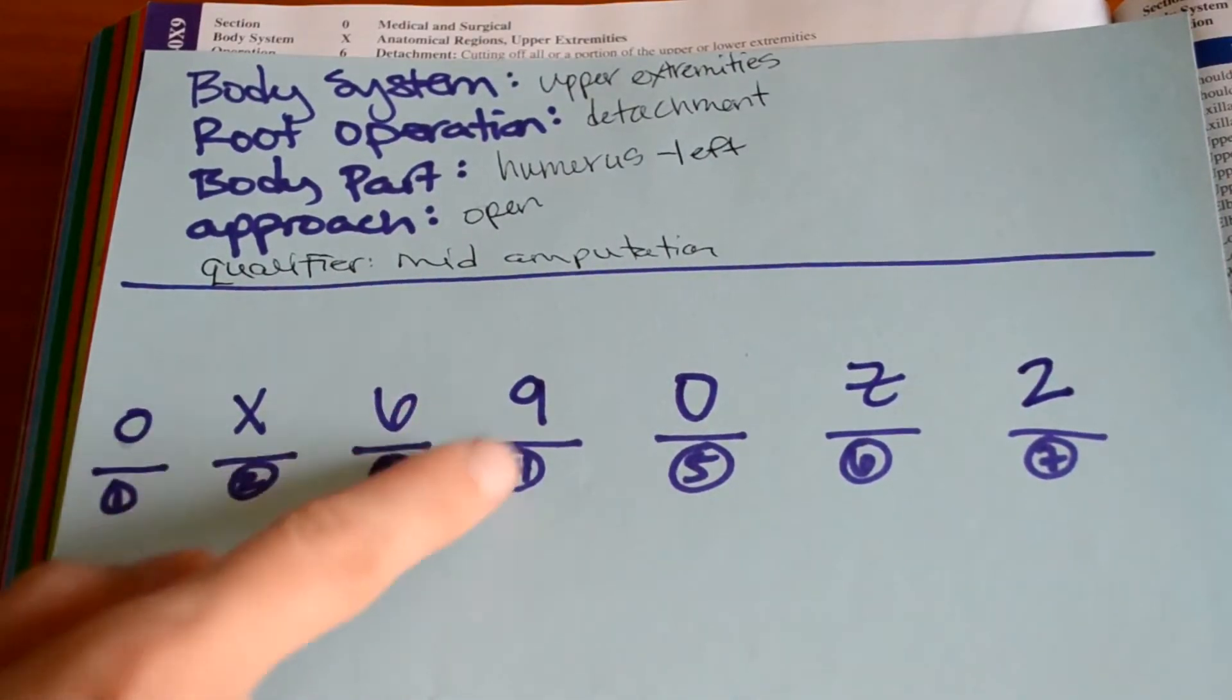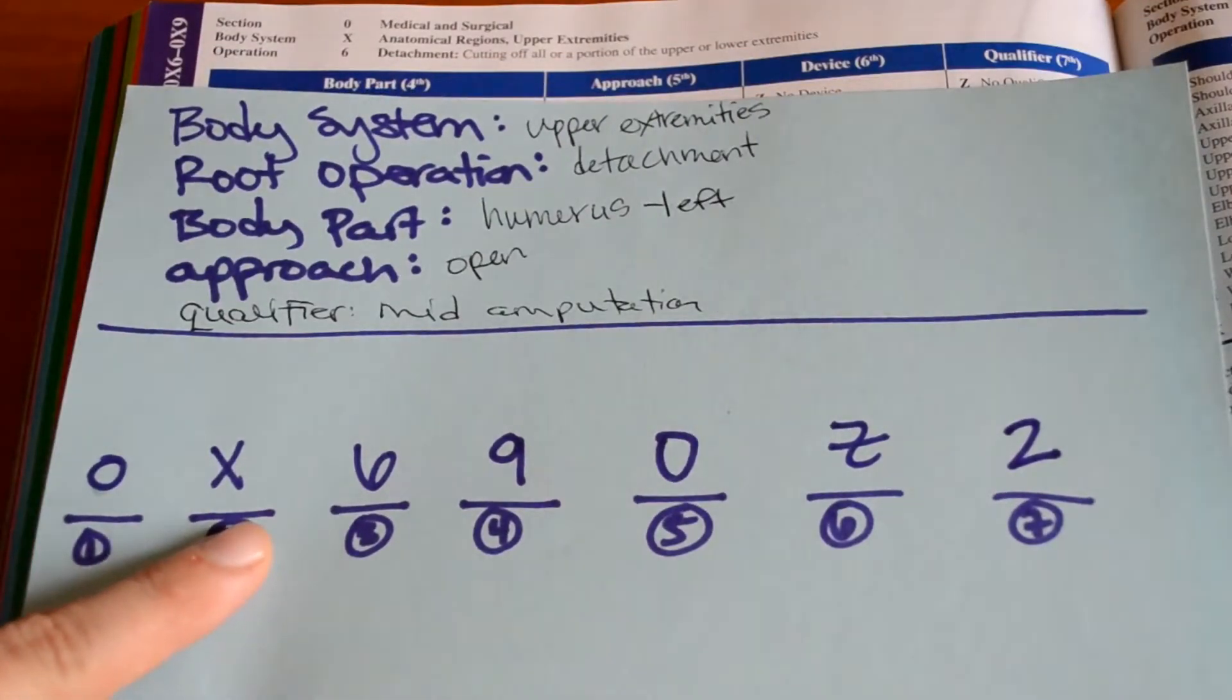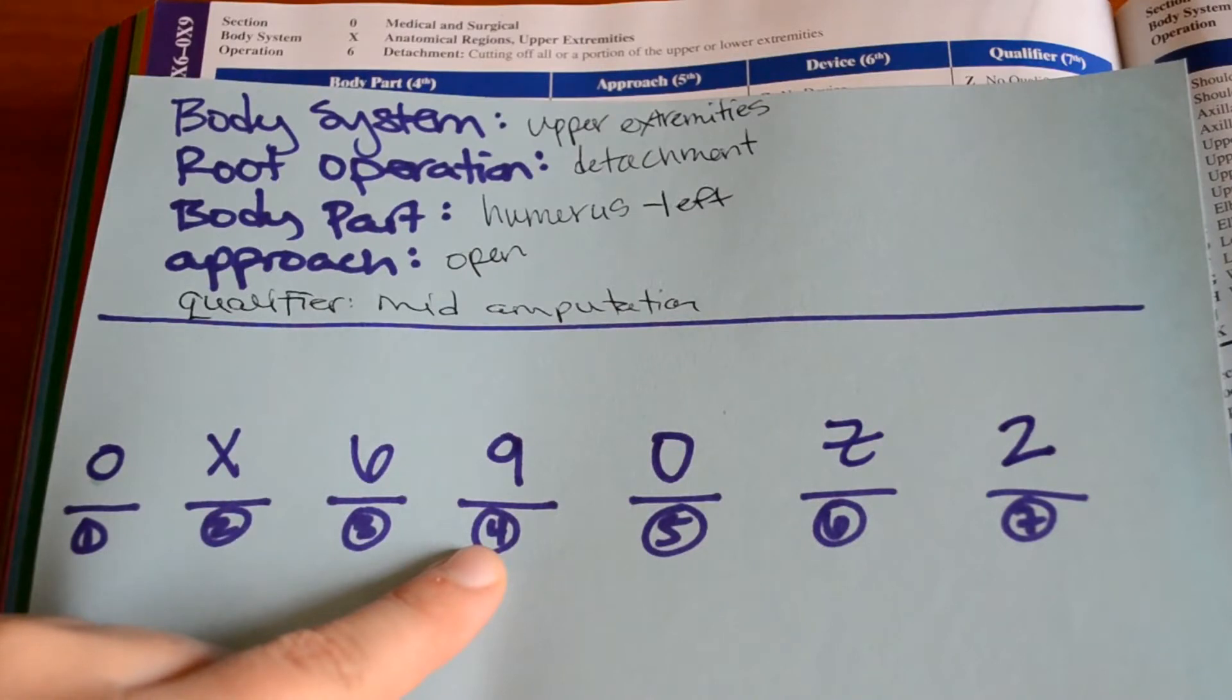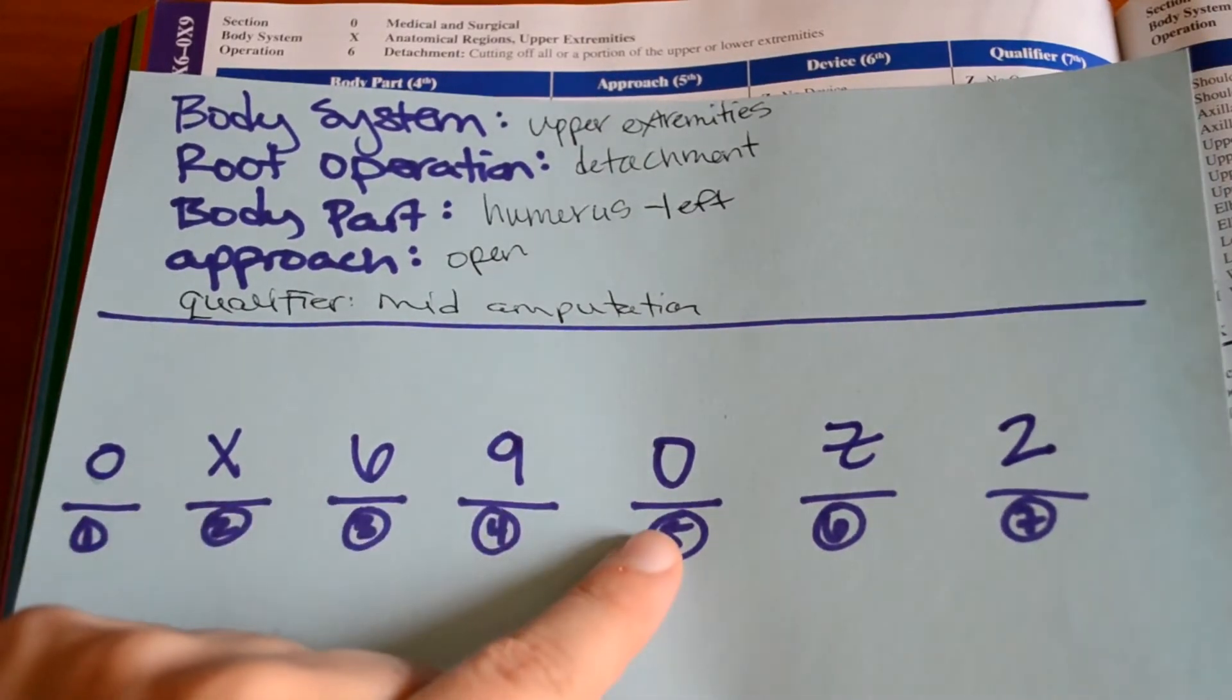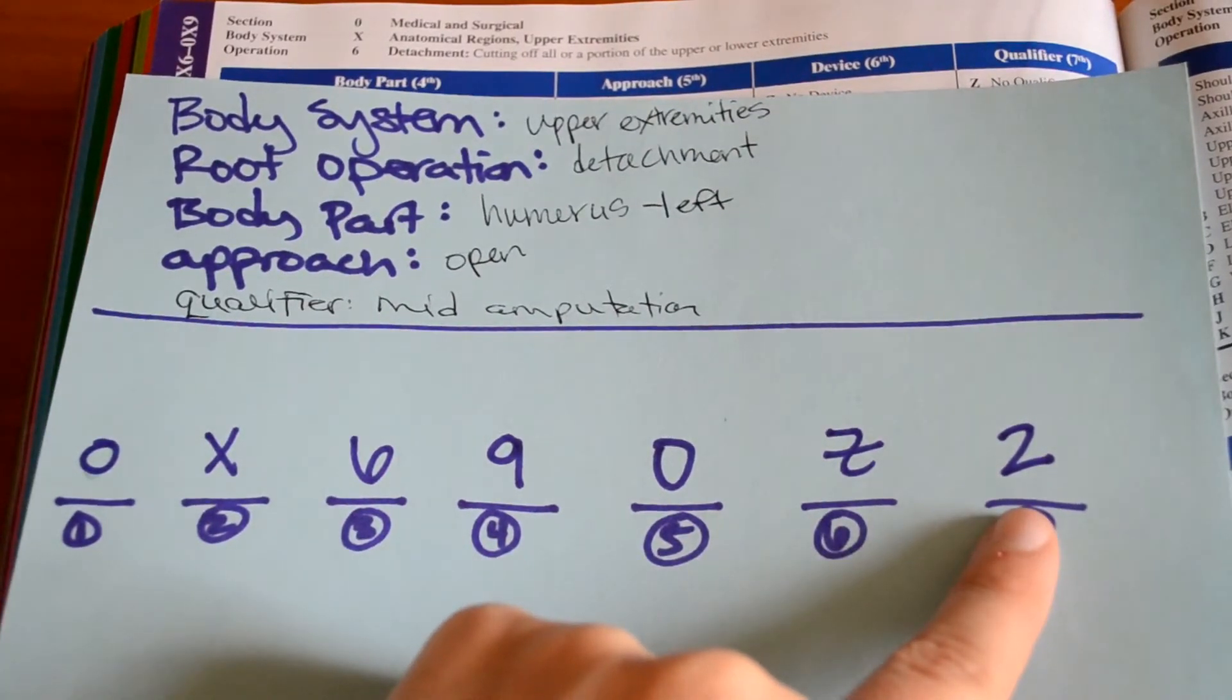O, X, 6, 9, O, Z, 2. O, medical, surgical. X, upper extremities. 6, detachment. 9, left upper arm. O, open. Z, no device. 2, mid.